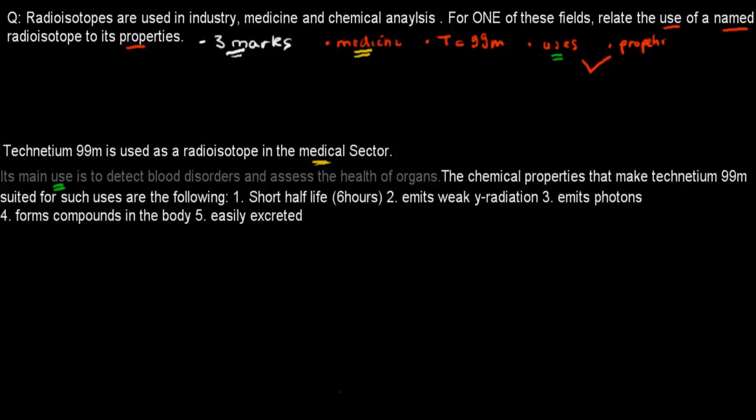In the next sentence, I've briefly stated its properties. The chemical properties that make Technetium 99M suited for such uses are the following: one, it has a short half-life; two, it emits weak gamma radiation; three, it emits photons; four, it forms compounds in the body; and five, it's easily excreted.